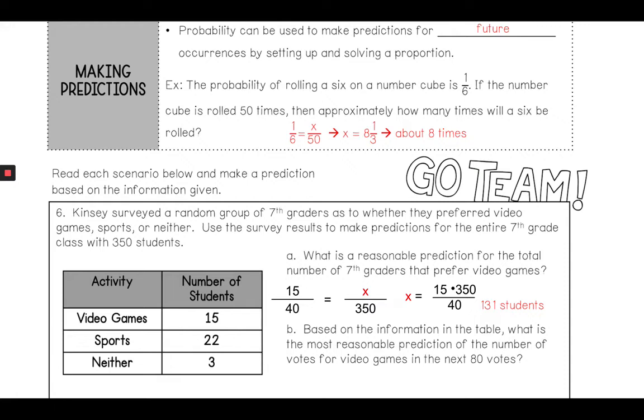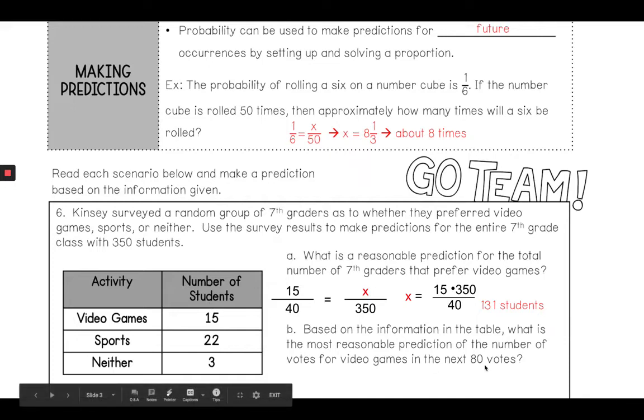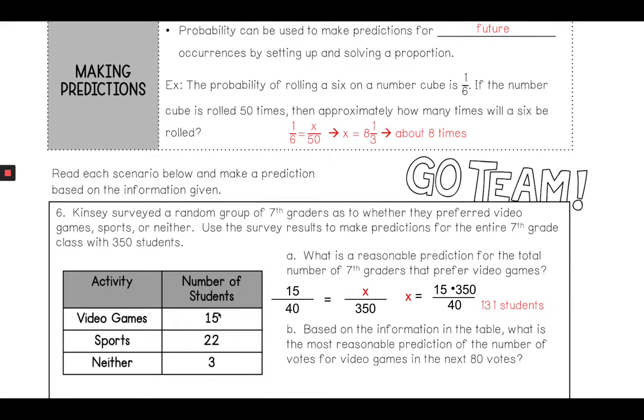Based on the table, what is the most reasonable prediction for the number of votes for video games in the next 80 votes? If I survey 80 people, this one right here shows 40. If I survey 80, that means it's just doubled. 40 to 80 is times by 2. A reasonable prediction would make this number and multiply it by 2. So then I would just say 15 times 2, and that would give me 30 students. The reason I could do that is because I know for the next 40, those results should just double. Will they when we do our experiment? No. But for the prediction part, we can predict that it would be 30 additional students because it just doubled.